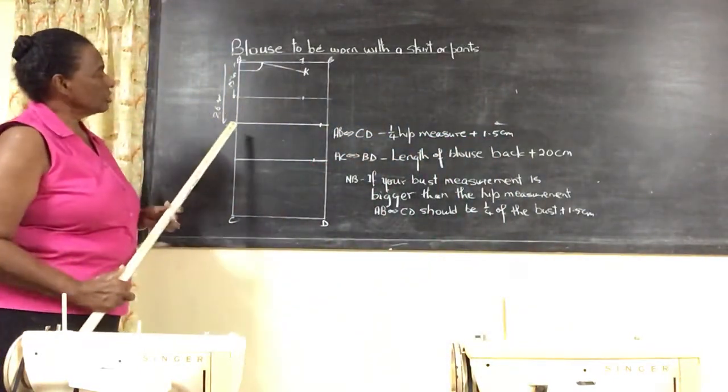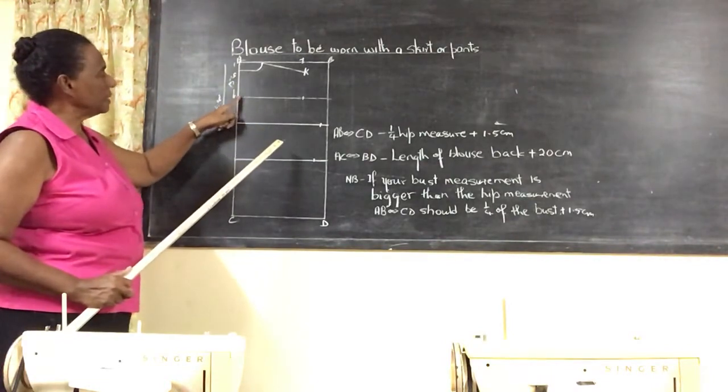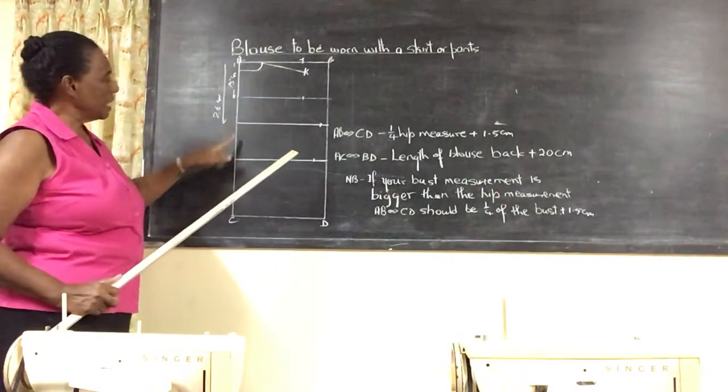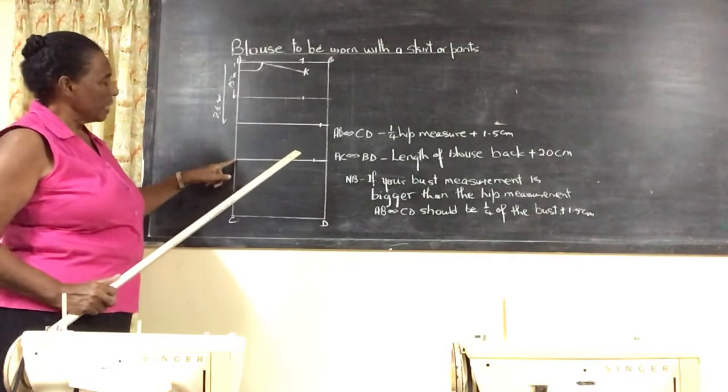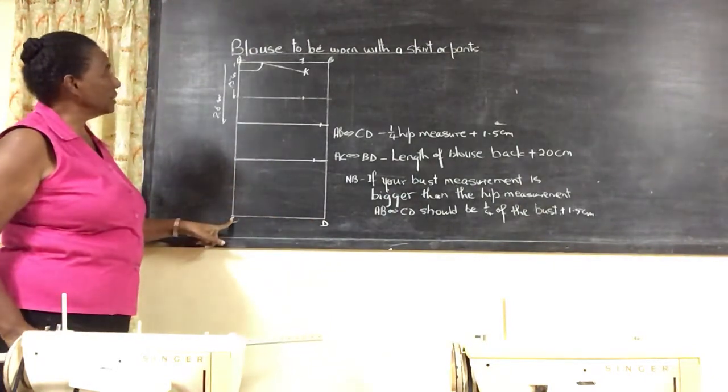Now, the basic construction lines: your across back line, your bust line, and your waist line. Then this 20-centimeter mark will be your hip line. Those are your construction lines.